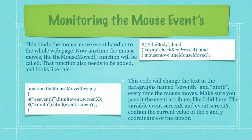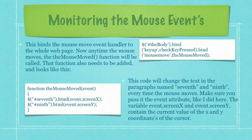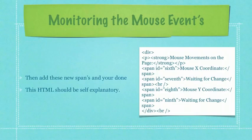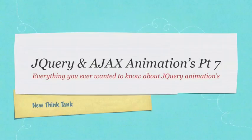That function also needs to be added and looks like what you see in the lower left-hand side of your screen. This code will change the text in the paragraphs named '7th' and '9th' every time the mouse moves. Make sure you pass it the event attribute. The variables event.screenX and event.screenY contain the current value of the X and Y coordinates of the cursor. Then add these new spans and you are pretty much all done — the rest of the HTML should be completely understandable to you.